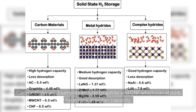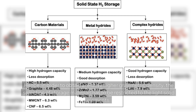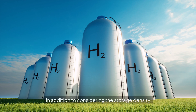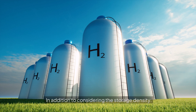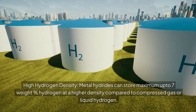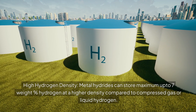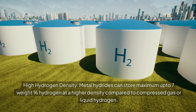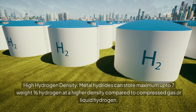Carbon materials, such as graphite and carbon nanofibers (CNF), can absorb hydrogen at higher capacity. In order to obtain a relatively higher gravimetric density, the selection of storage materials has to be restricted to light solid elements. In addition to considering storage density, metal hydrides can store a maximum of up to 7 weight percent hydrogen at a higher density compared to compressed gas or liquid hydrogen.